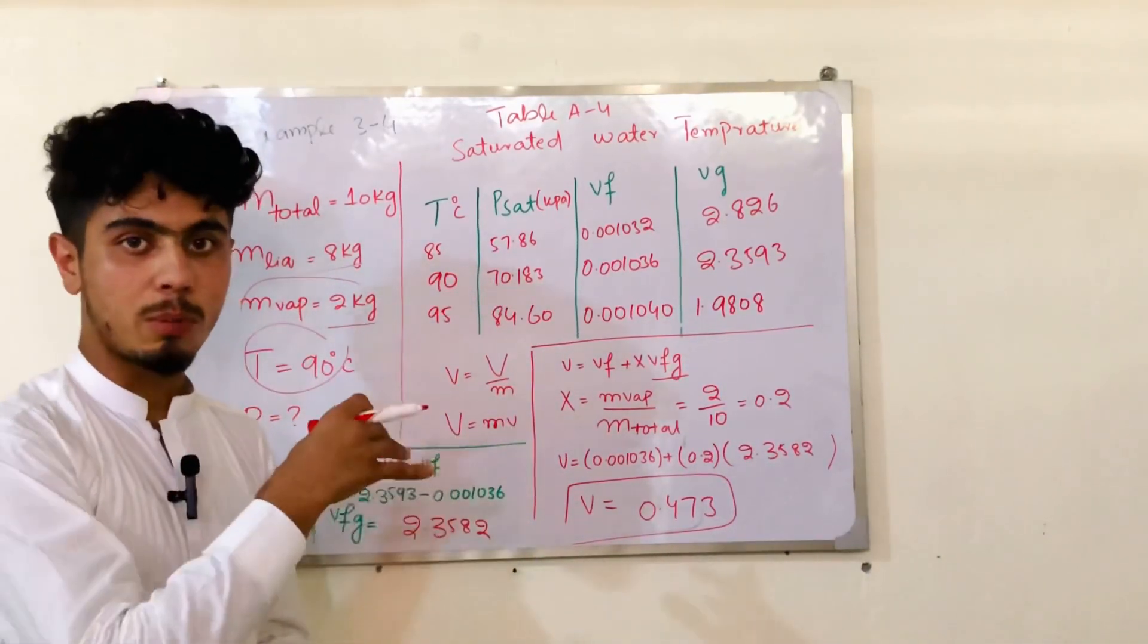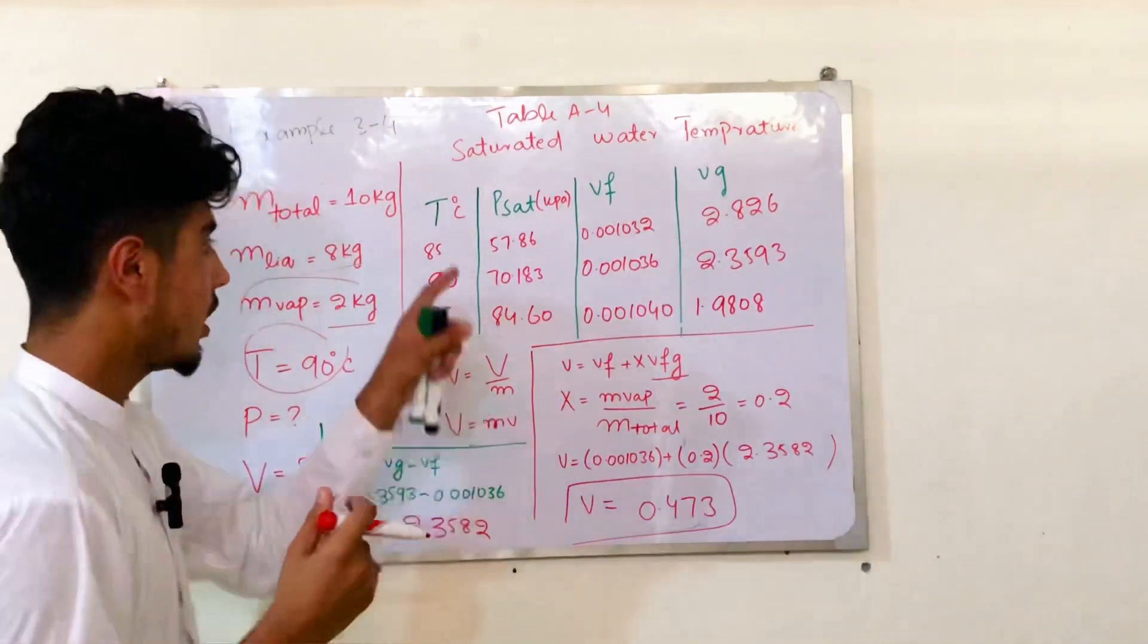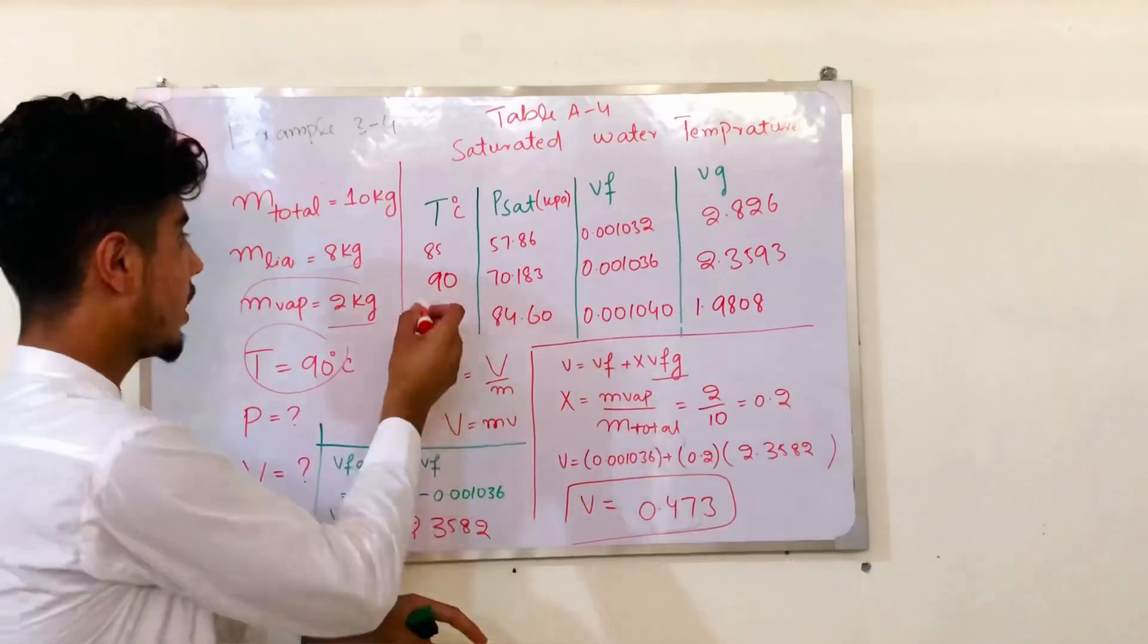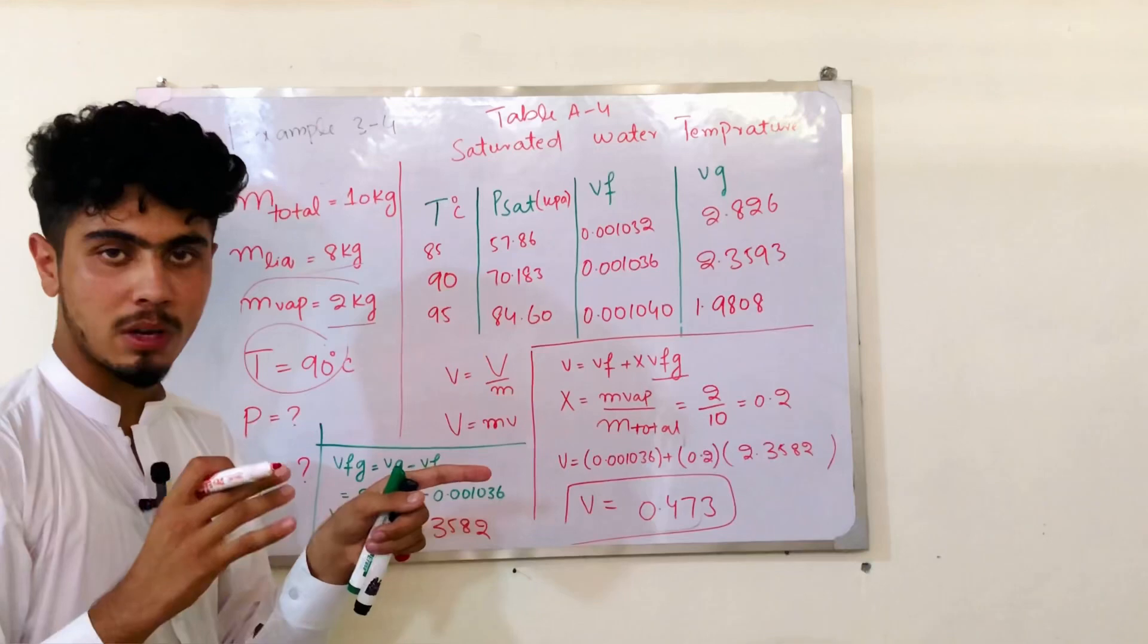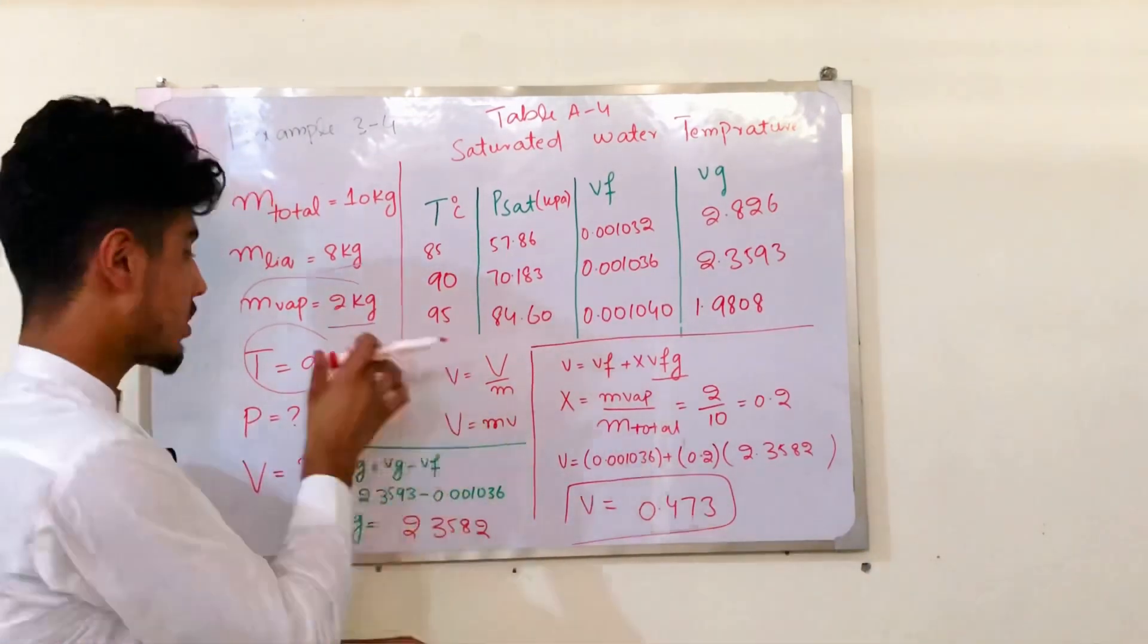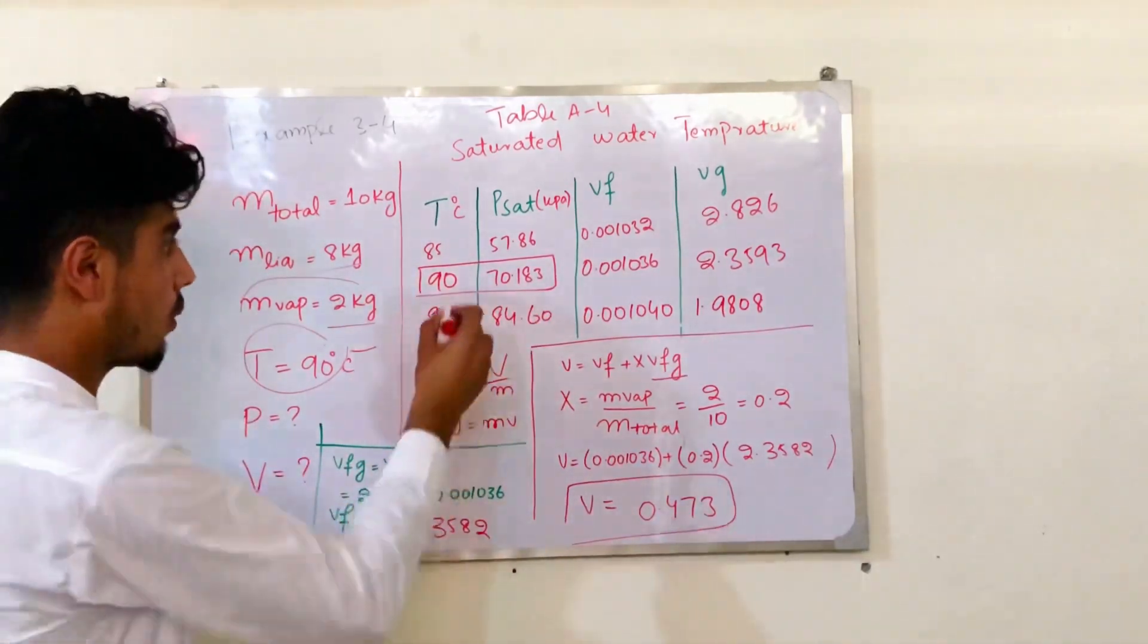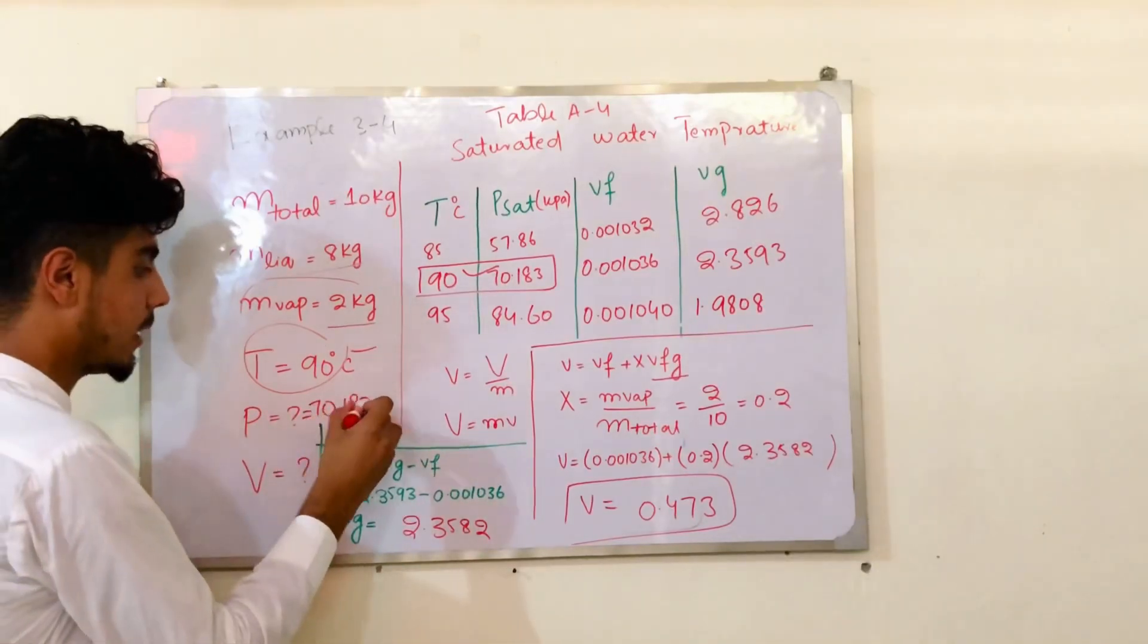We need to find the pressure for the saturated water. What we know is the temperature. The pressure is determined from temperature. At 90 degrees Celsius, from the tables, the pressure is 70.183 kPa.